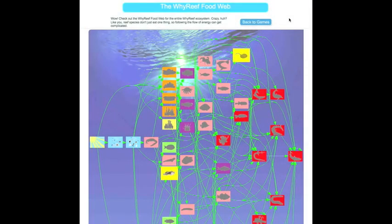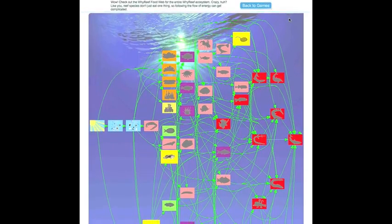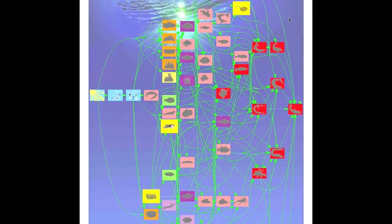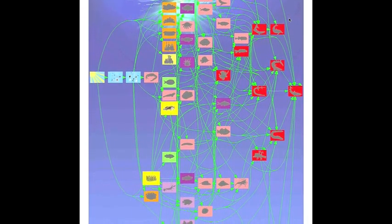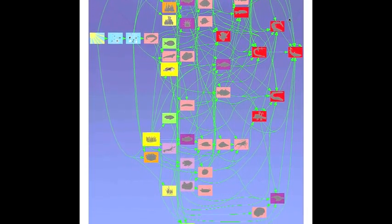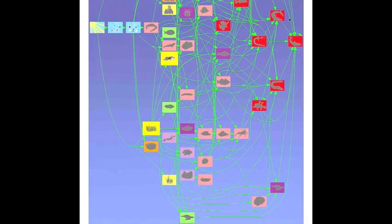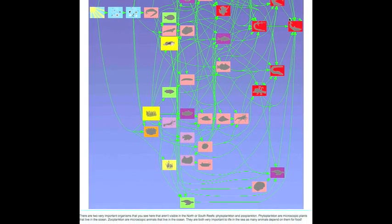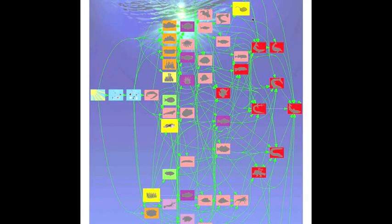After you have successfully completed your mini food web, you will see the entire Y Reef food web. This shows how energy flows through all of the 50 species in Y Reef and how all 50 species are connected to each other. The organisms from the mini food web you just completed are in color and are highlighted in bright yellow boxes. You can see the rest of the 50 Y Reef species as shadows in their trophic level boxes.